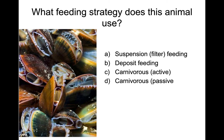Thinking about mussels — what kind of feeding strategy is this organism using? The answer is suspension feeding or filter feeding. They put out little filters and as water passes through they pull particulate matter out of the water column to use as food. Not deposit feeding because they're not picking it up off the ground — they're pulling things out of the water column, not picking it up off of the sea floor.